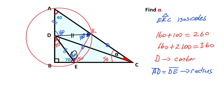Angle DEK is 60 degrees, that means angle DKE must also equal 60 degrees, so 40 degrees are left here. If you focus on angle EKC, we know that a straight angle equals 180 degrees, so 80 degrees remain here.